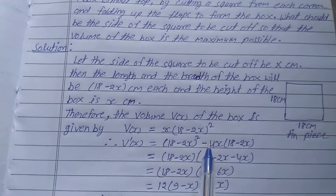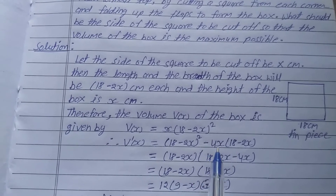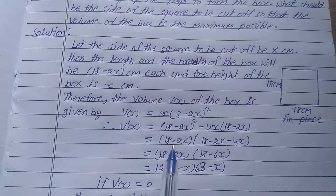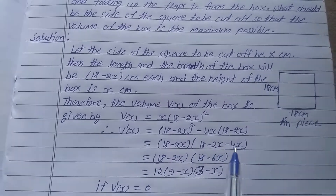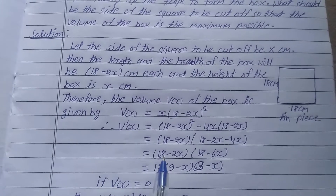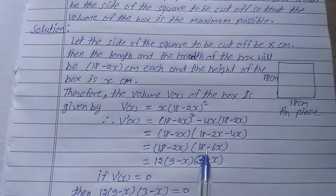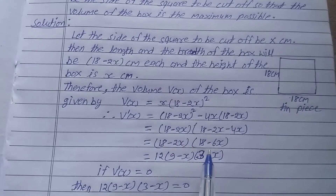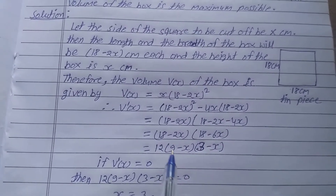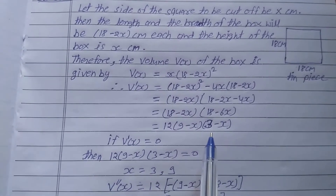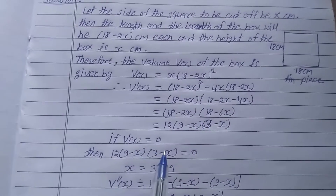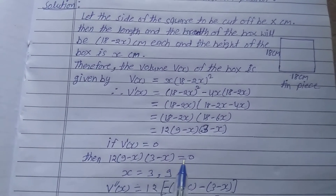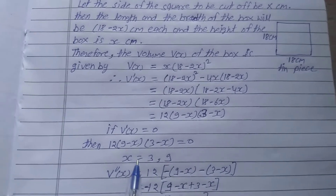Inside the bracket: 18 is constant so its derivative is 0, and the derivative of minus 2x is minus 2. So minus 2 multiplied by 2 gives minus 4, giving minus 4x times (18 minus 2x). Taking (18 minus 2x) as common gives (18 minus 2x)(18 minus 6x), then taking 2 common and 6 common gives 12(9 minus x)(3 minus x). Setting V'(x) = 0 gives x = 3 or x = 9.